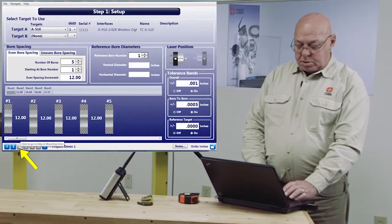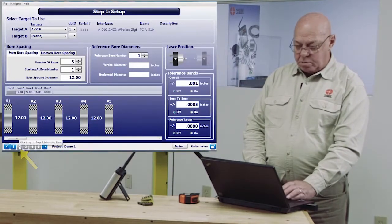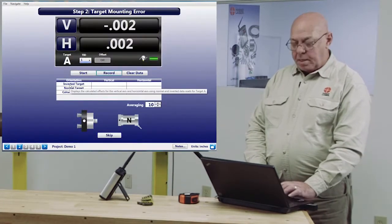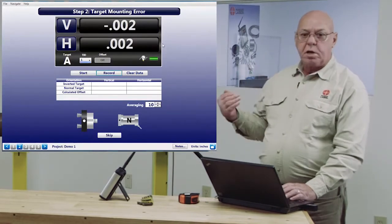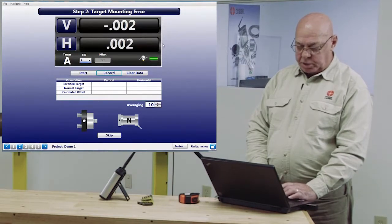So now we'll go to step two, which is down on the bottom. We just highlight step two. Here we can determine the target mounting error. In this case, the mounting error doesn't matter. The mounting error will always be the same, so it's immaterial what the mounting error is. So we just skip that step.